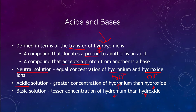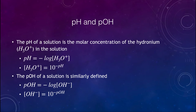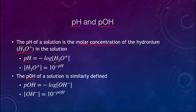Let's look at how we can measure these using pH and pOH. The pH of a solution is based on the molar concentration of hydronium (H₃O⁺). The pOH is defined similarly as the molar concentration of the hydroxide ion (OH⁻). We define pH to be minus the logarithm of the hydronium concentration, and inversely, the hydronium concentration equals 10 to the negative pH.